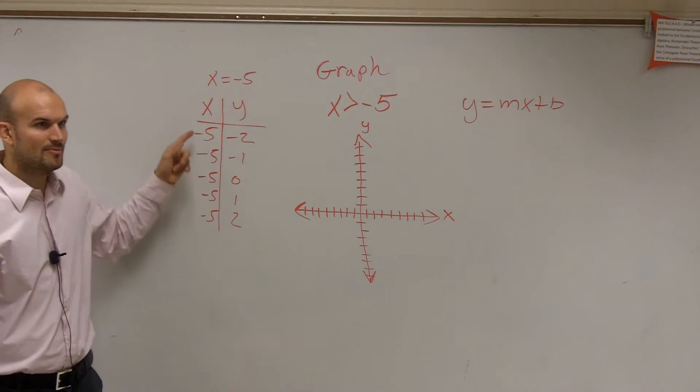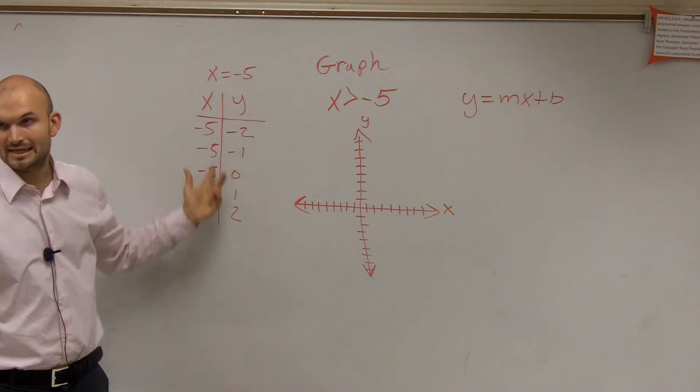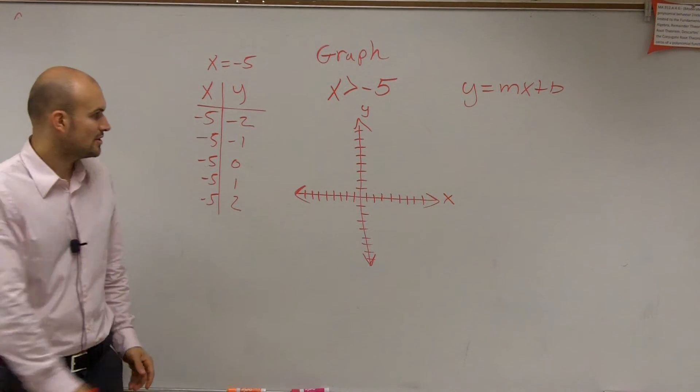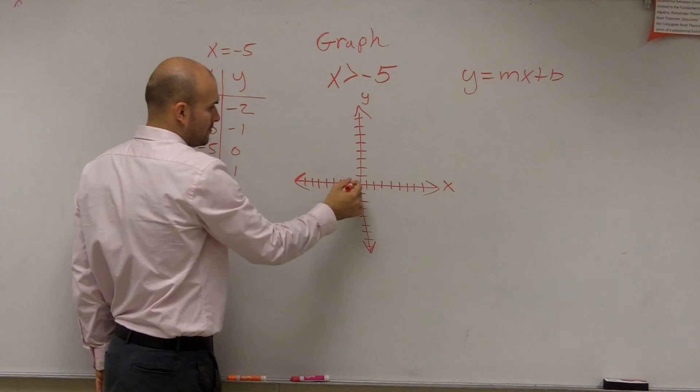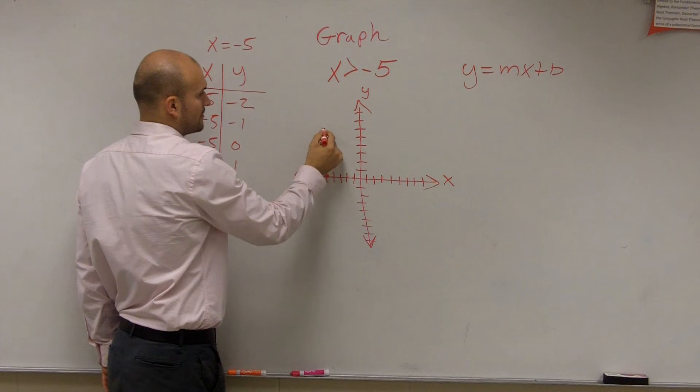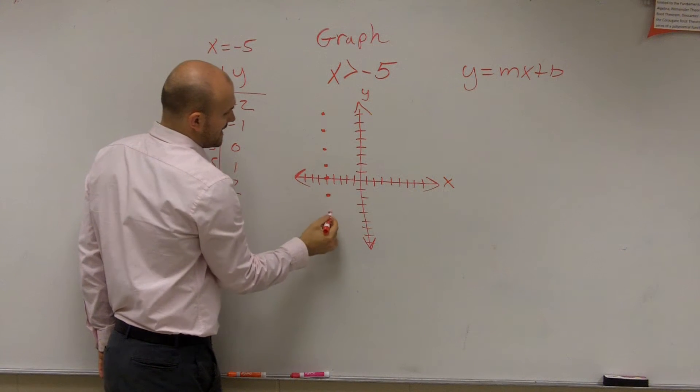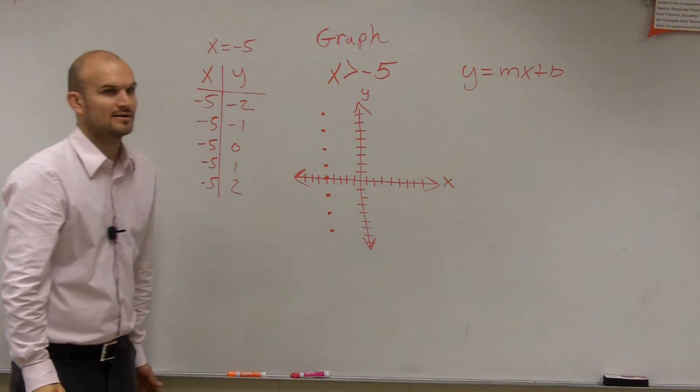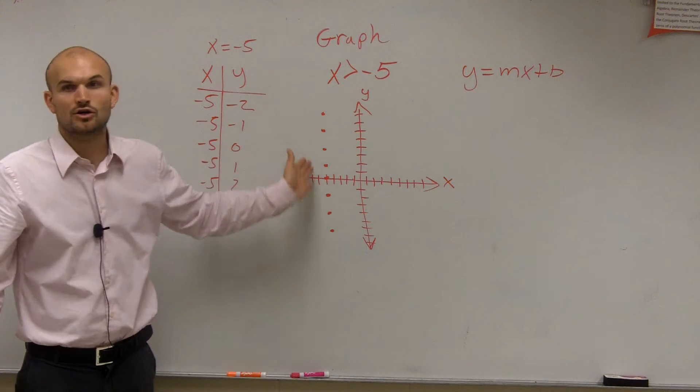So do you guys see, no matter what my y value is, x is always going to equal negative 5. So it doesn't matter what my y value is, 1, 2, 3, 4, 5, x always equals negative 5. It doesn't matter what I pick. So what I have in this case is a vertical line.